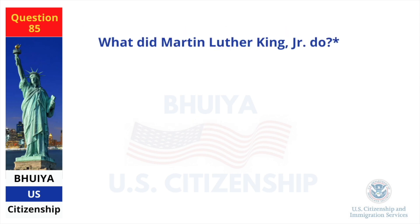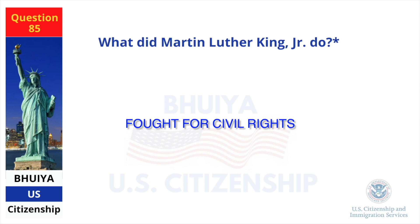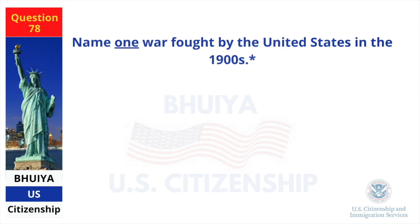What did Martin Luther King Jr. do? Fought for Civil Rights. Name one war fought by the United States in the 1900s. World War I.